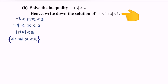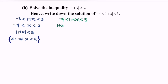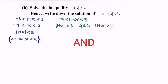Now write down the solution for this part where we have modulus of 1 plus x greater than negative 4 and less than 3. Based on the definition, kindly split the situation — we will have modulus of 1 plus x less than 3, and modulus of 1 plus x greater than negative 4.